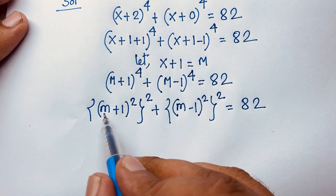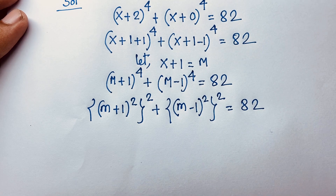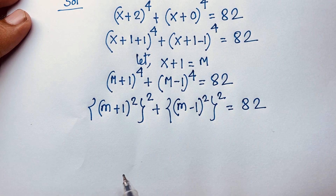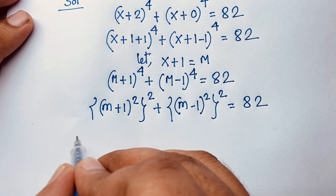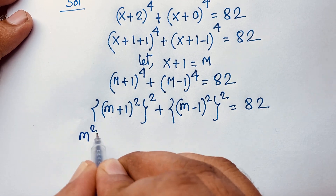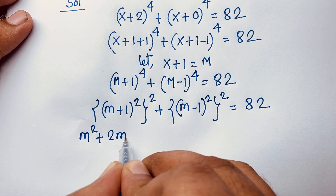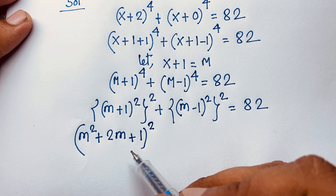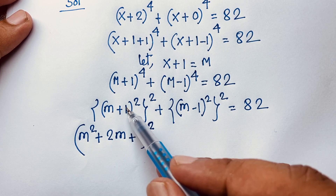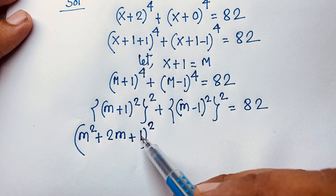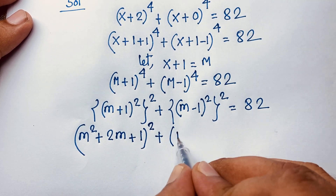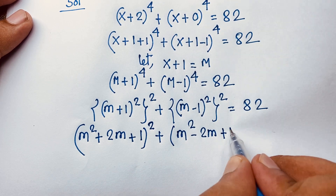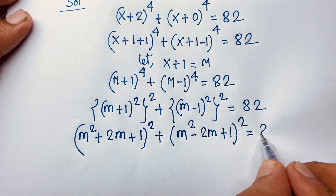Now I apply this formula: (a + b) whole square and (a − b) whole square. You know that (a + b)^2 will be a^2 + 2ab + b^2. According to this formula, I can say this expression will be (m^2 + 2m + 1) whole to the power 2, plus (m^2 − 2m + 1) whole to the power 2, is equal to 82.